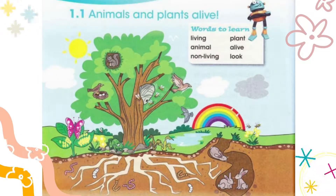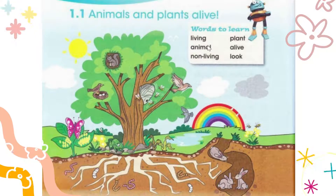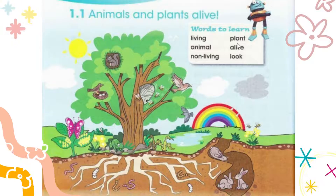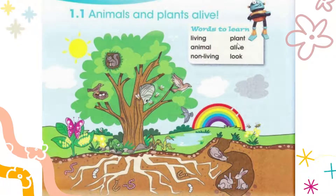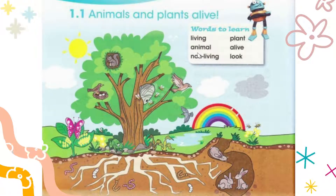First we will learn some new words. Our first new word is 'living' — L-I-V-I-N-G. Living means we are living our life, like plants are living their life, like animals are living their life. Next is 'plant' — P-L-A-N-T. Everyone knows what a plant is. And the next word is 'animal' — A-N-I-M-A-L.